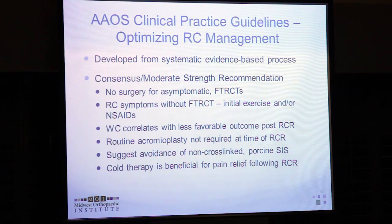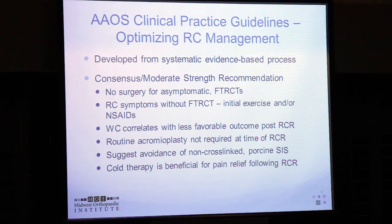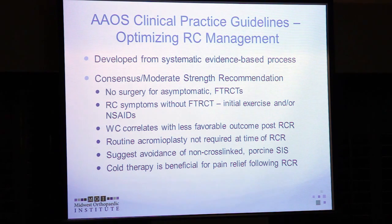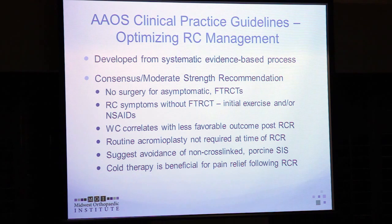The AAOS developed evidence-based guidelines on optimizing rotator cuff management. A panel did a systematic review producing consensus, moderate-strength, weak, and inconclusive recommendations. Their consensus and moderate-strength recommendations include: don't operate on asymptomatic full-thickness rotator cuff tears; conservative treatment is appropriate for symptomatic rotator cuff without full-thickness tears; work comp correlates with less favorable outcomes; routine acromioplasty is not required; avoid non-cross-linked submucosal grafts; and cold therapy is beneficial after repair.